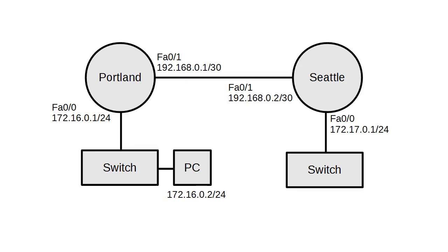The PC has its default gateway set to the Portland router, so I should be able to ping the Portland router and both its interfaces, because the Portland router knows about my network. However, trying to ping across the connection between Portland and the Seattle router will not work, because the Seattle router does not know how to get back to my network. So let's look at static routing and make that all work.